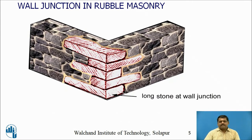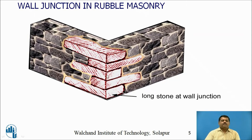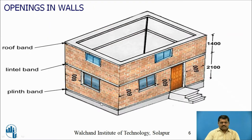One more measure is that at wall junctions, long stones shall be provided at the corners. At each corner, a long stone is provided extending in both directions of the walls. By providing these long stones, the joint becomes intact and separation of masonry units at corners is avoided.